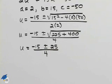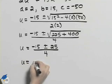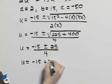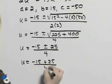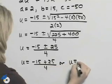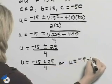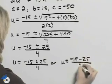And so we have this. Now we can separate this into u equal to negative 15 plus 25 over 4 or u equal to negative 15 minus 25 over 4.